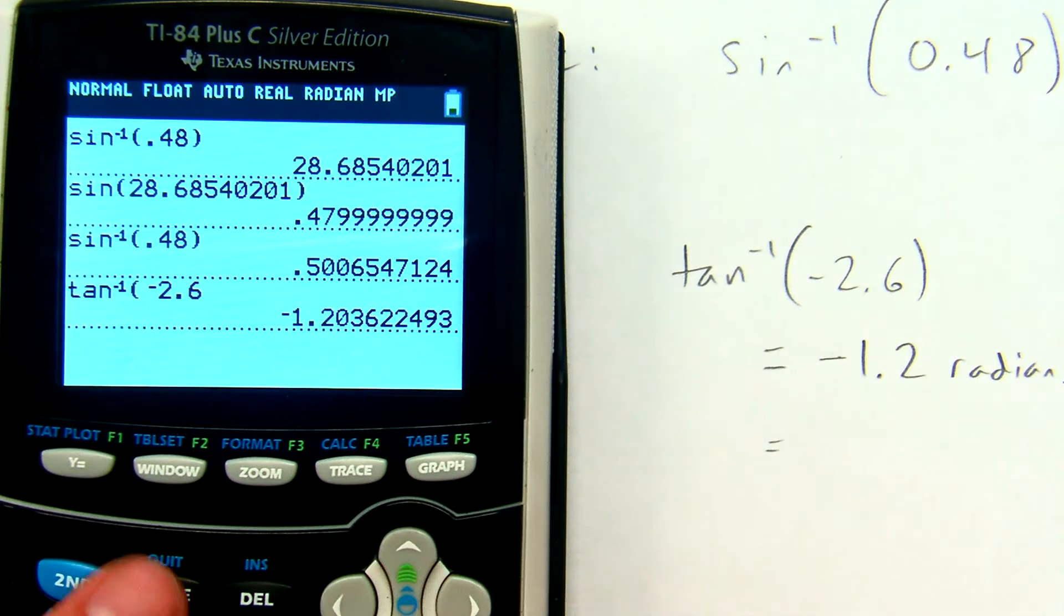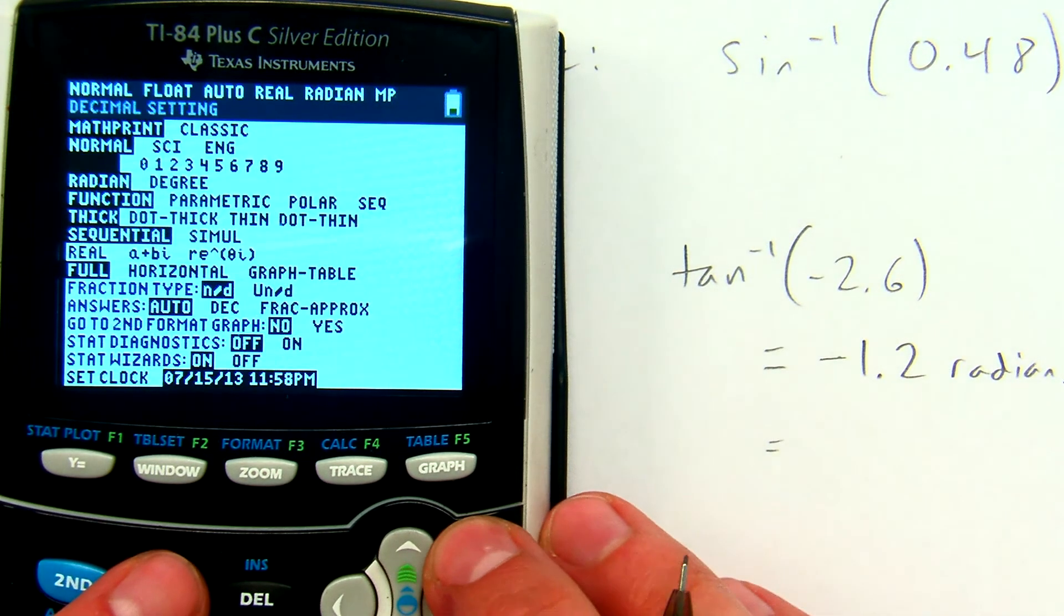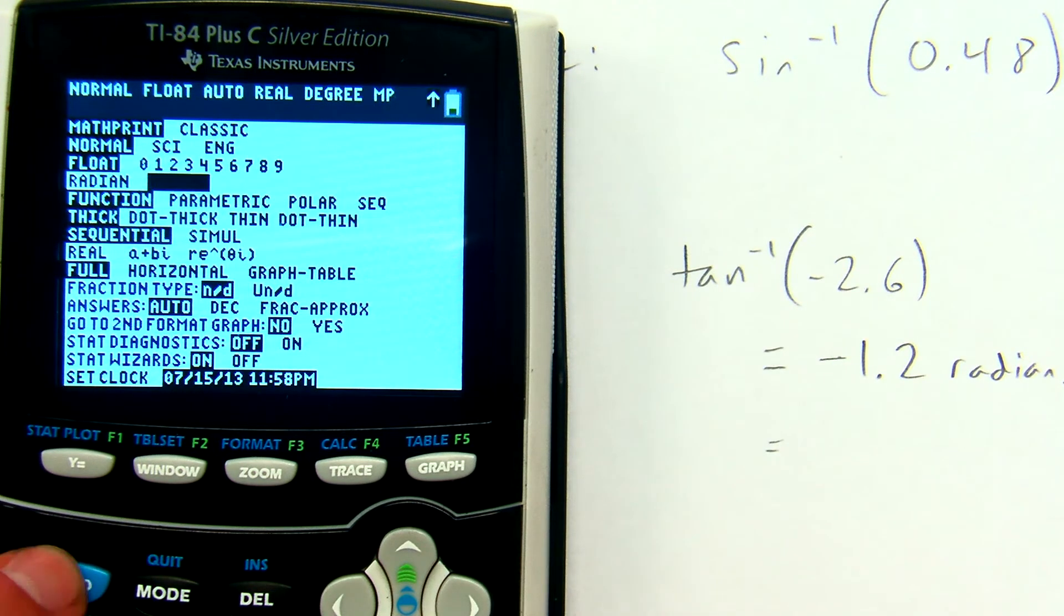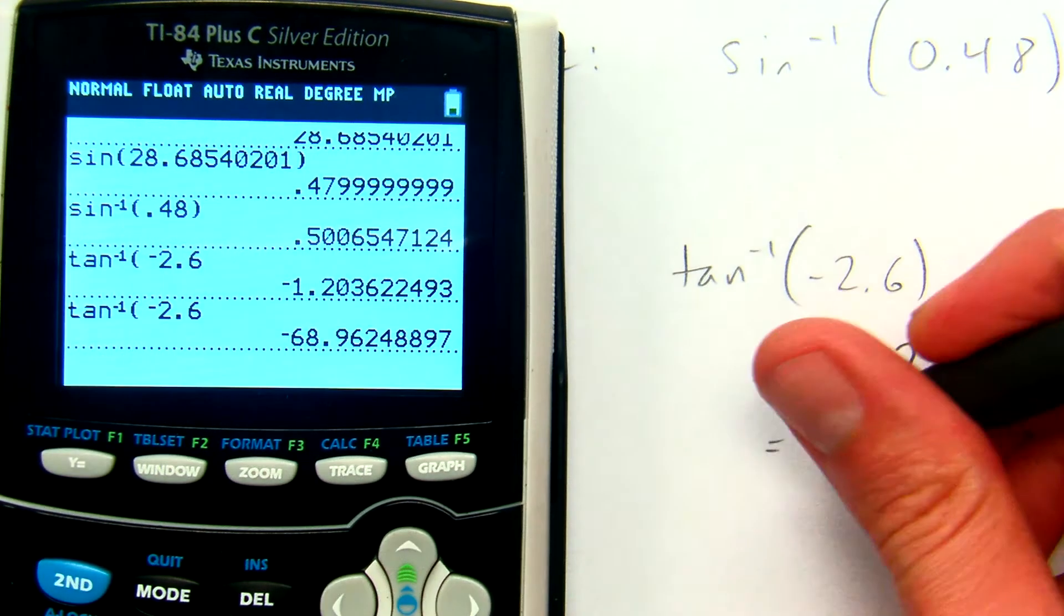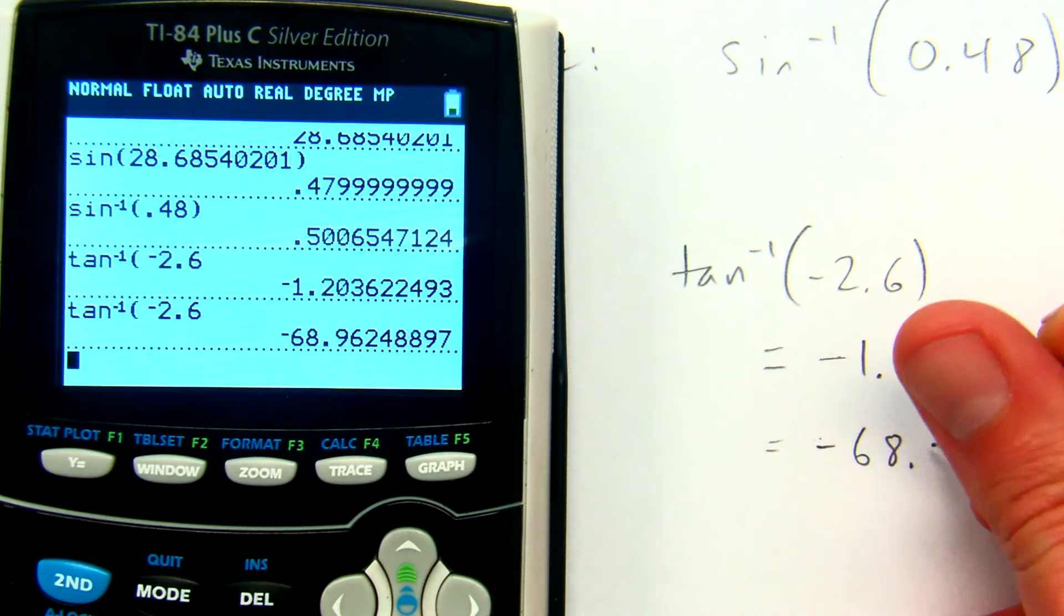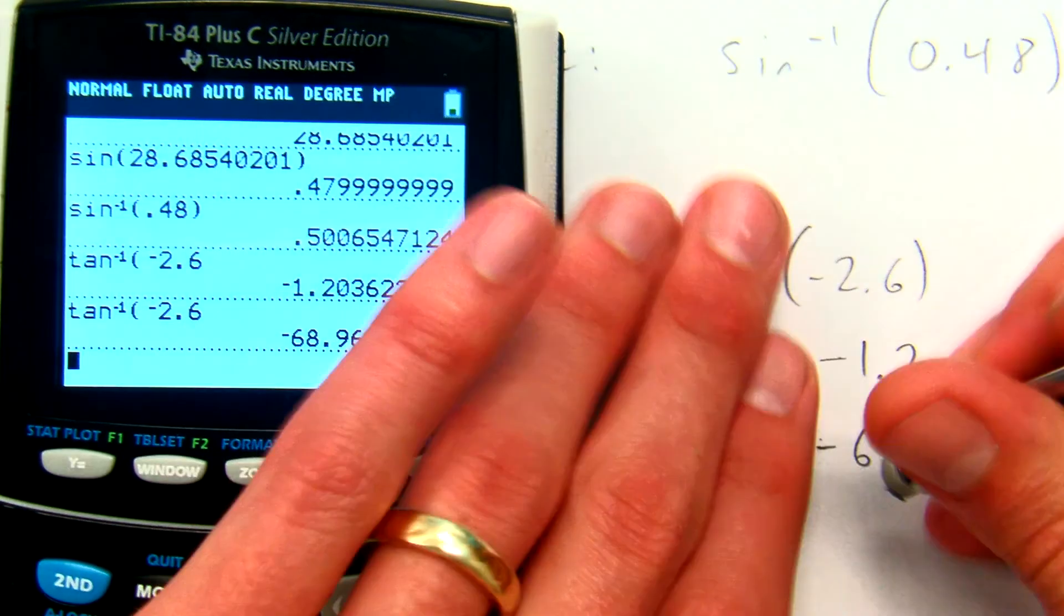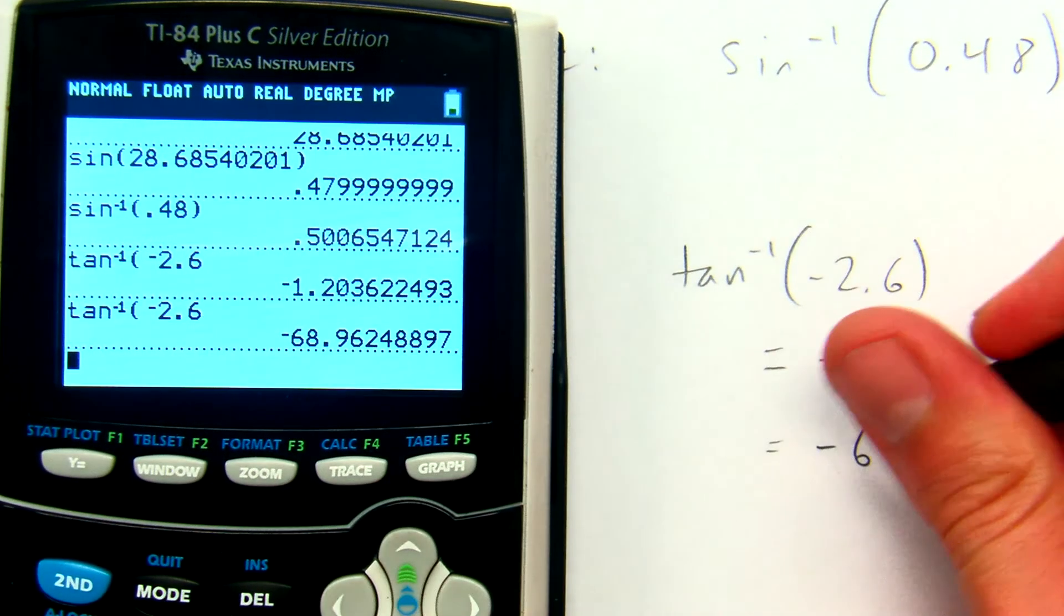I'll switch to degrees and try the whole thing again. Inverse tangent, inverse tangent, I have negative 2.6, and I get negative 69.0 when I round. Degrees.